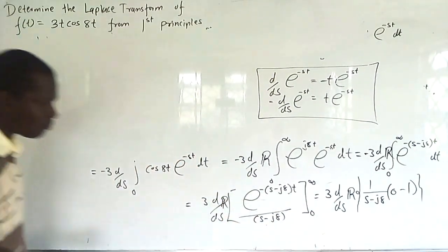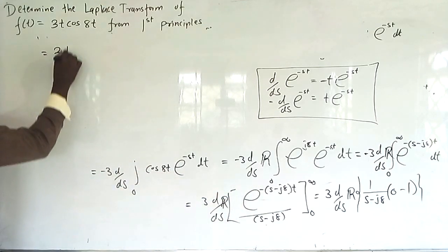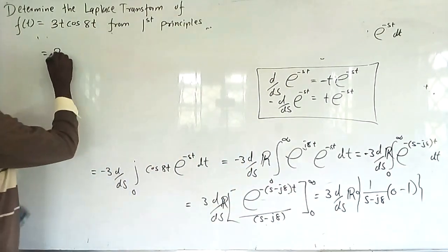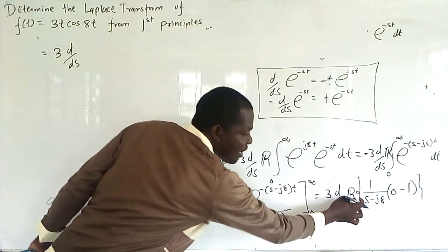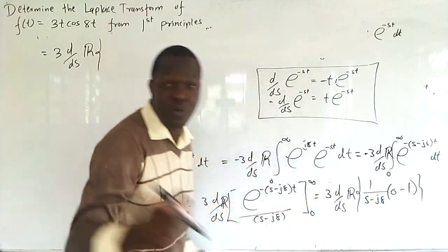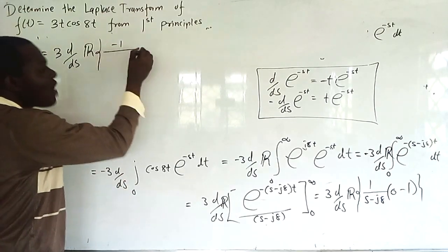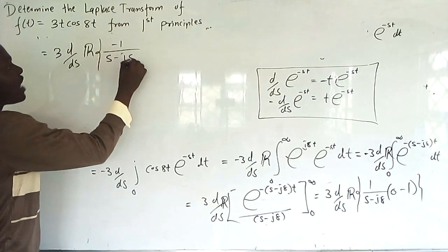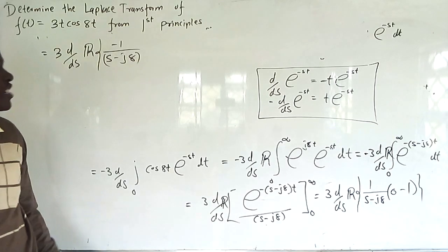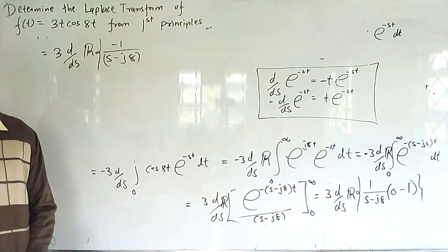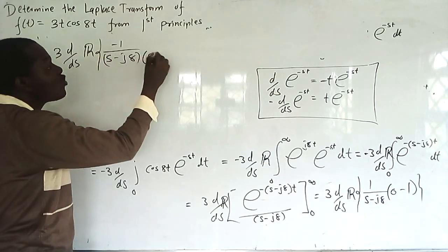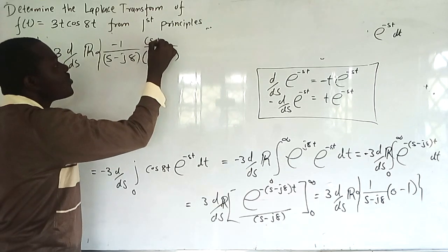Continuing from there: we now have 3·d/ds of the real part of -1/(s - j8). We need to rationalize the denominator by multiplying with the complex conjugate. Changing the sign in between, the conjugate is (s + j8), and we multiply both numerator and denominator by (s + j8).